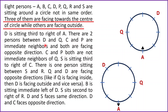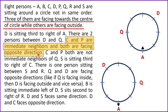C and P are immediate neighbors and both are facing opposite directions — we don't know C and P yet, so I'll highlight this and come back later. It is given that neither C nor P are immediate neighbors of Q. So they cannot come at this position adjacent to Q.